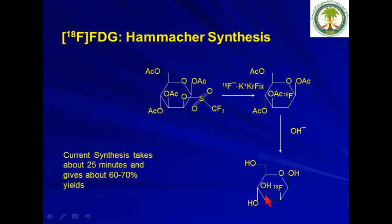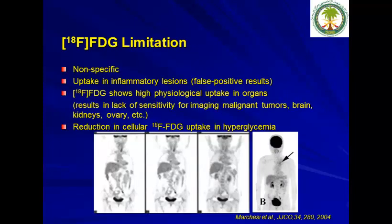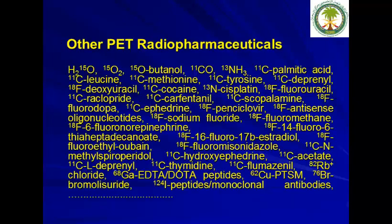The yield in this case is almost 70%. FDG has limitations: it is nonspecific, with uptake in inflammatory lesions that may result in false positive results. FDG also has high physiological uptake in organs such as the brain, and there is a reduction in cellular uptake in hyperglycemia.